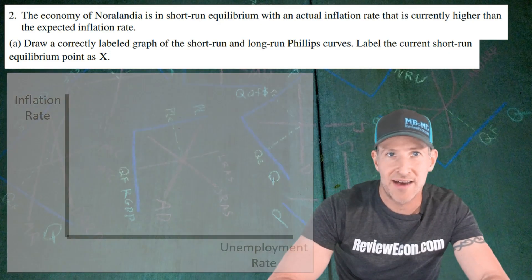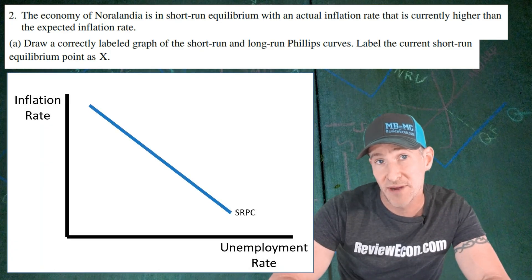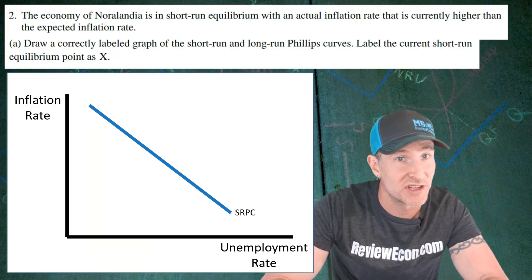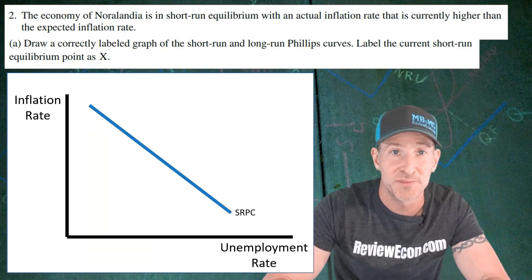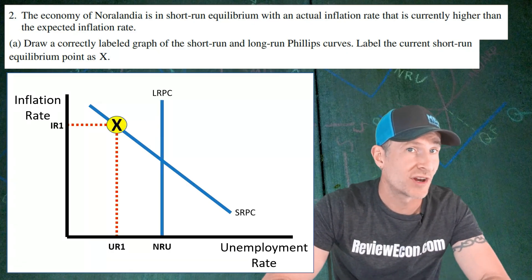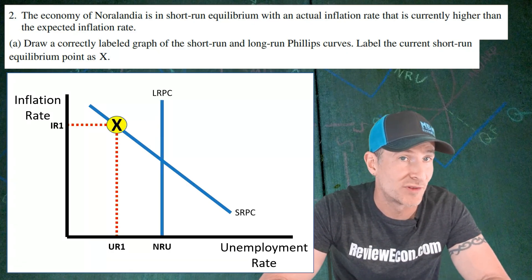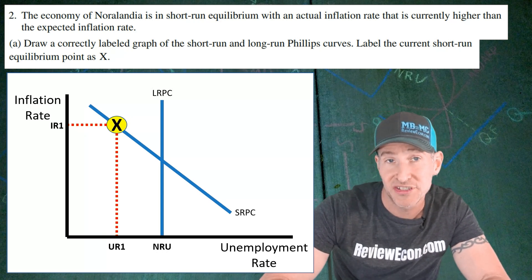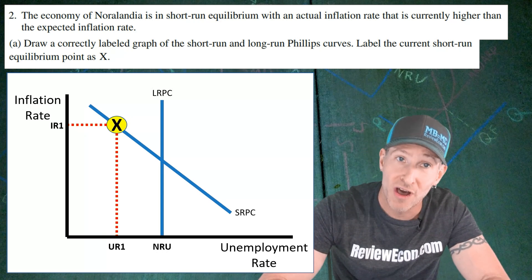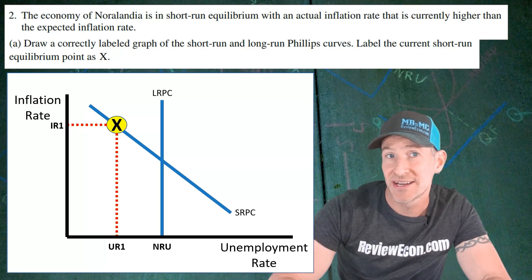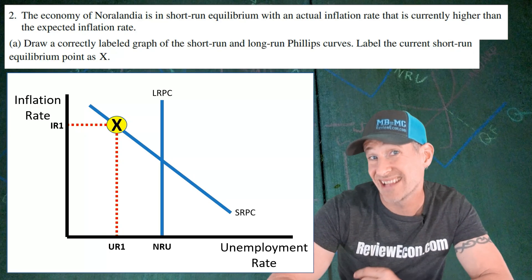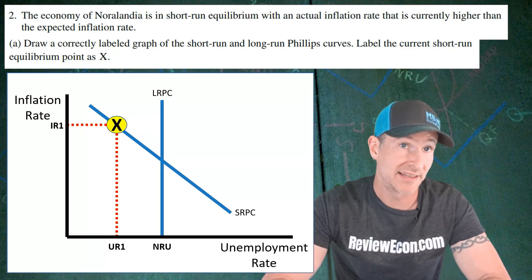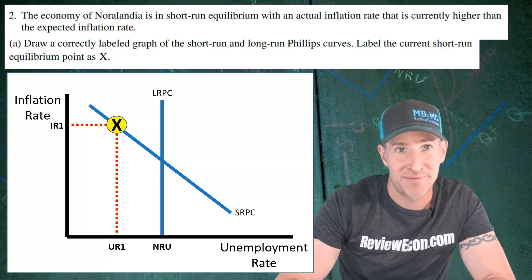For that first point, we draw our short-run Phillips curve with the unemployment rate on the X-axis and the inflation rate on the Y-axis. The short-run Phillips curve is downward sloping and labeled SRPC. The second point comes from adding the long-run Phillips curve. You should have the natural rate of unemployment (NRU) below that long-run Phillips curve, and point X above the intersection between the two curves but along the short-run curve. That indicates we have a higher than expected inflation rate — the expected rate is found at the intersection of the two curves — and a lower than natural rate level of unemployment.